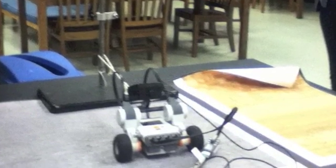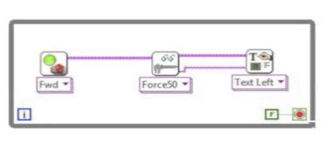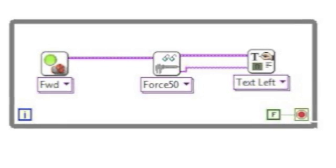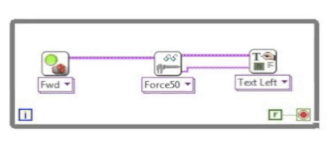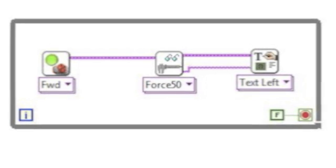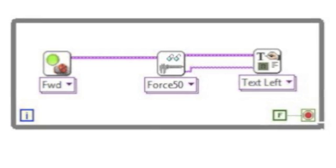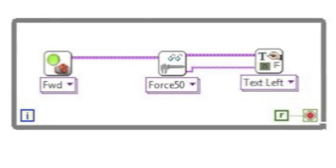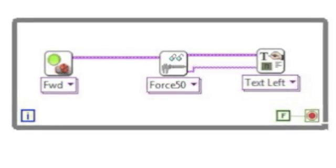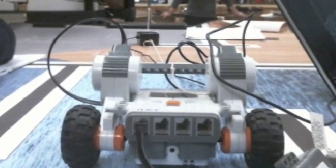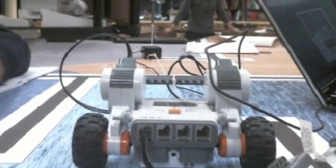So they would tie the rope to a ringstand and measure the tension. They wrote programs in LabVIEW. They taught themselves how to take a force sensor reading using LabVIEW, and it took them a while to figure out that they would also need a loop in order to continuously take force readings and display it on the NXT.